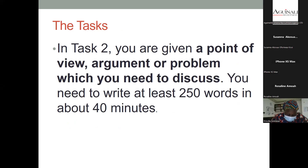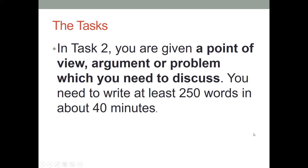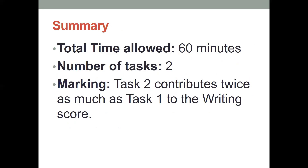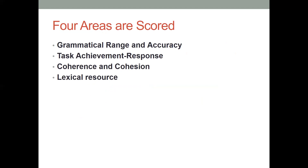In task two, you are given a point of view, argument, or a problem which you need to discuss. You need to write at least 250 words in about 40 minutes. The total time allowed for that exam is 60 minutes, which is one hour. The number of tasks is two — task one and task two. Task two contributes twice as much as task one to the writing score. That is why more time is allocated to it, and you get twice the results for what you write there.